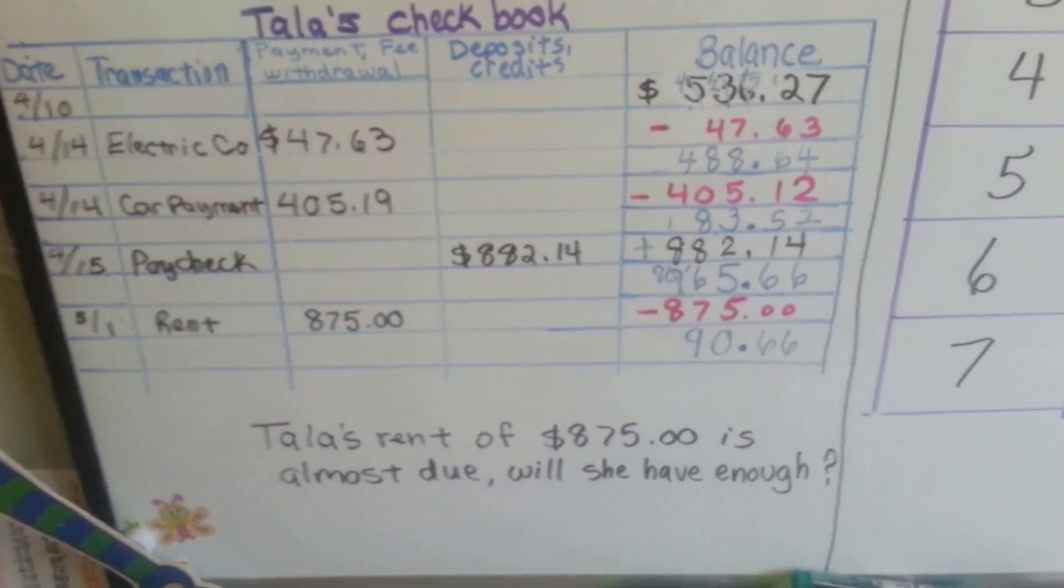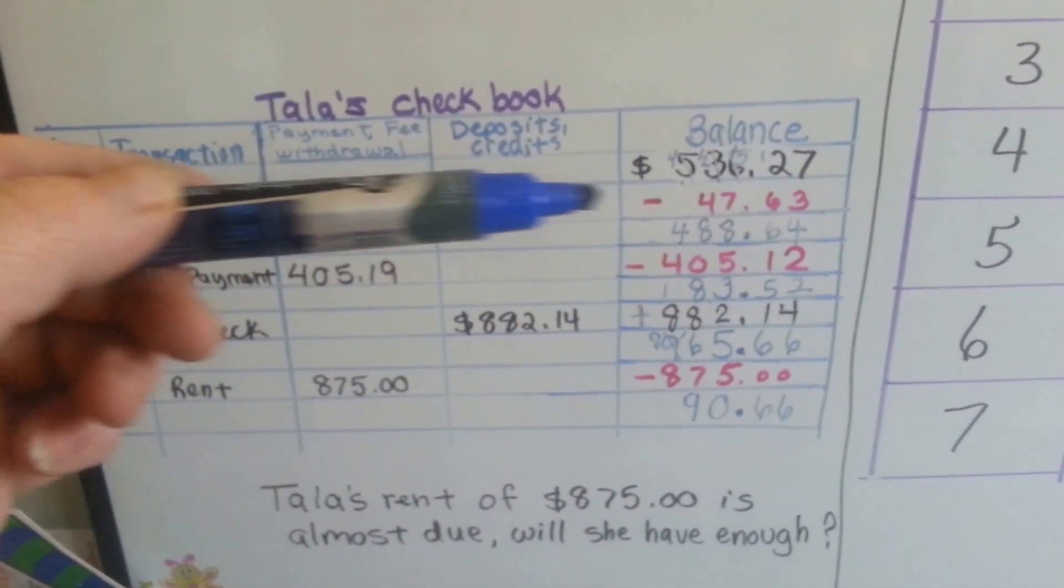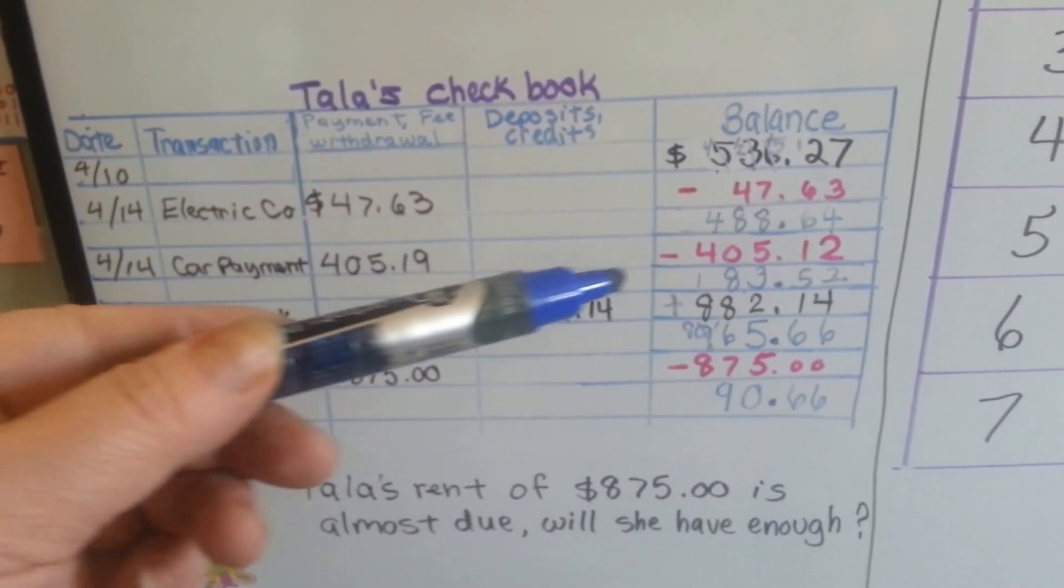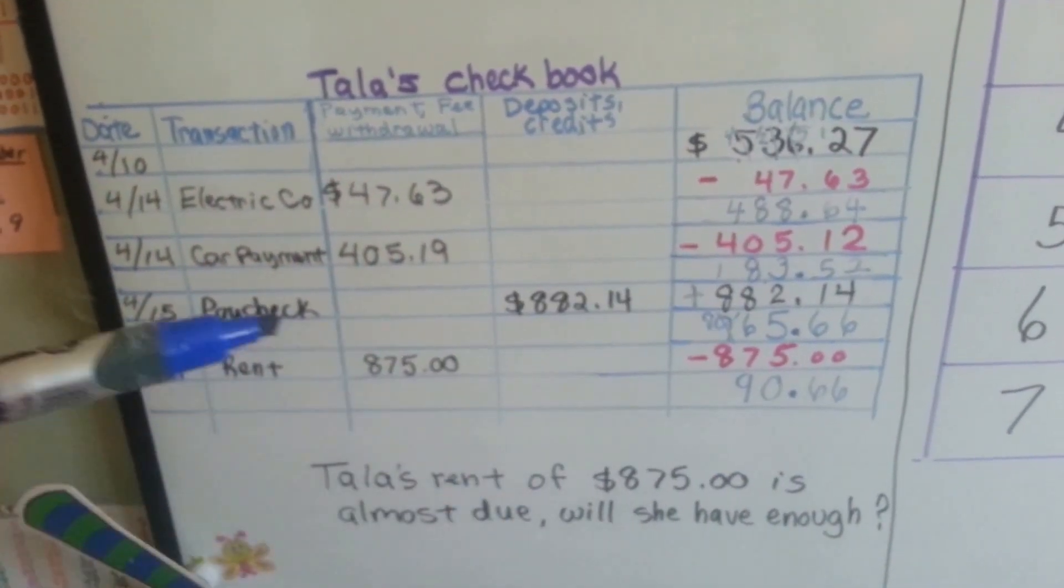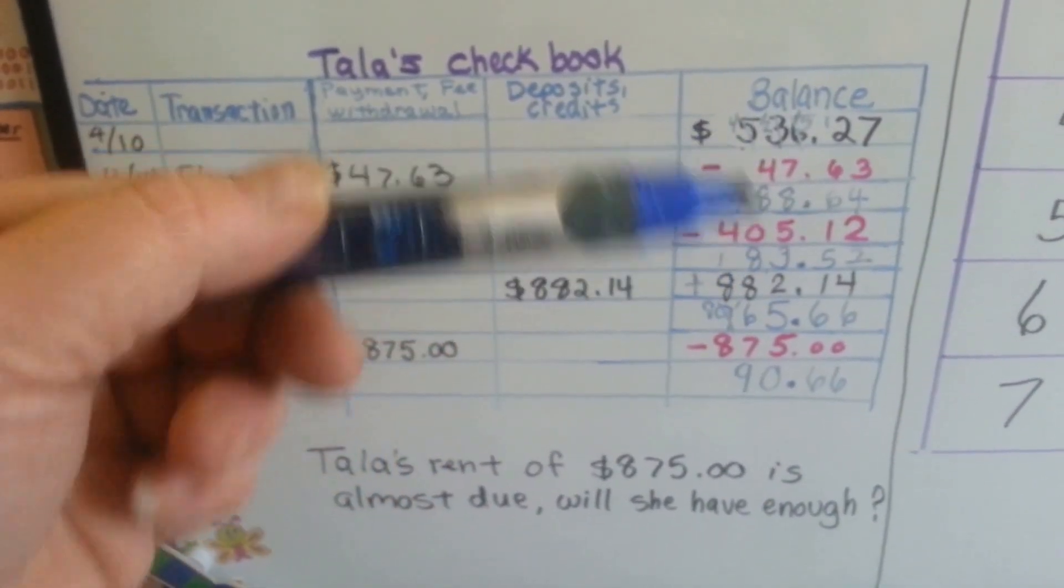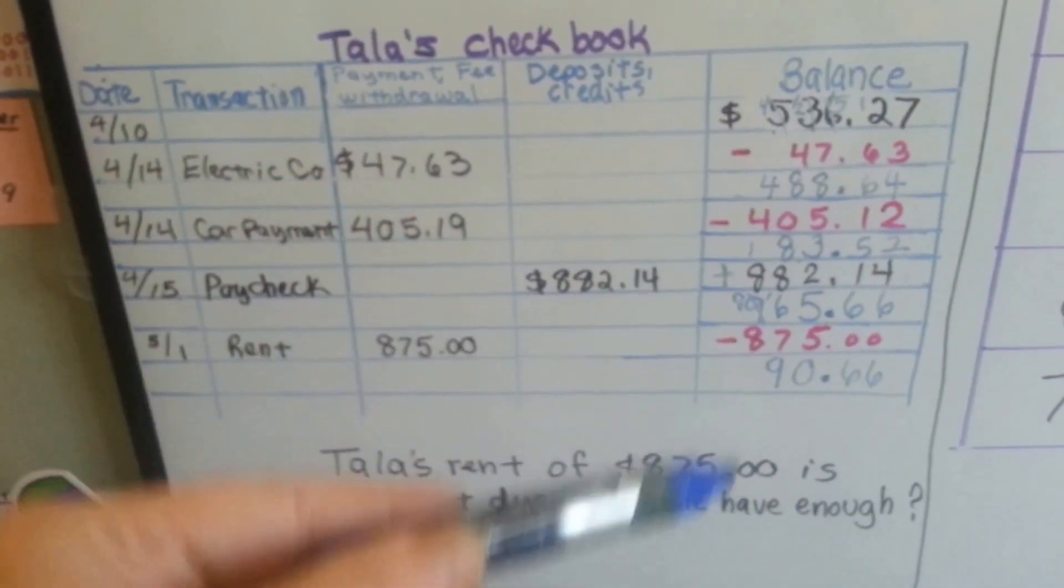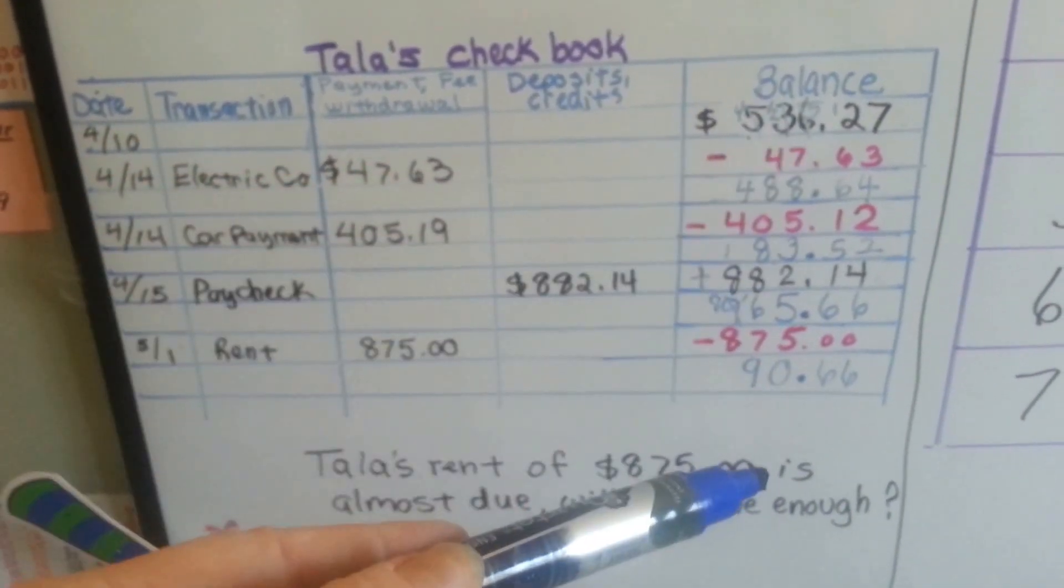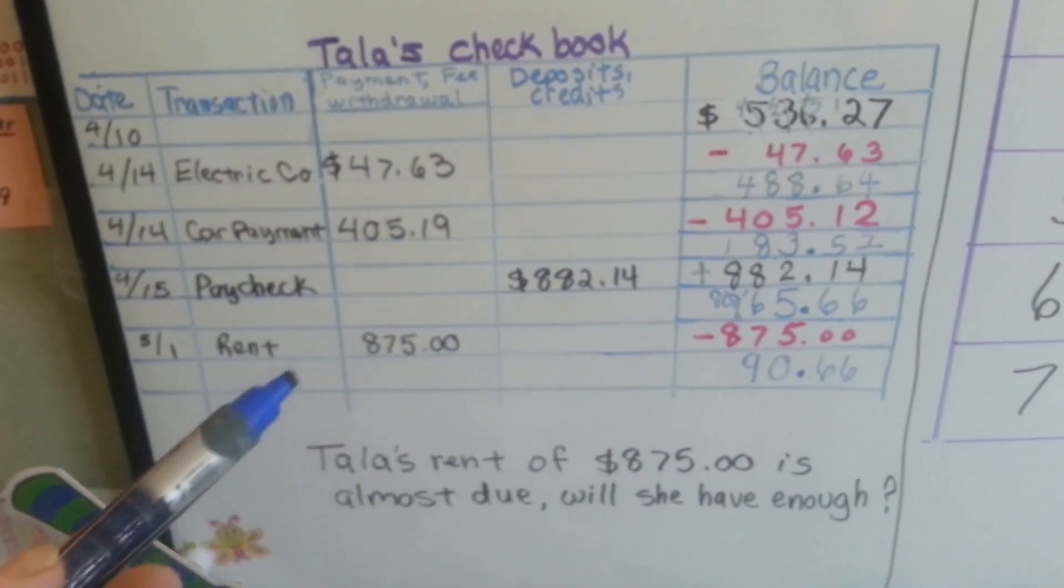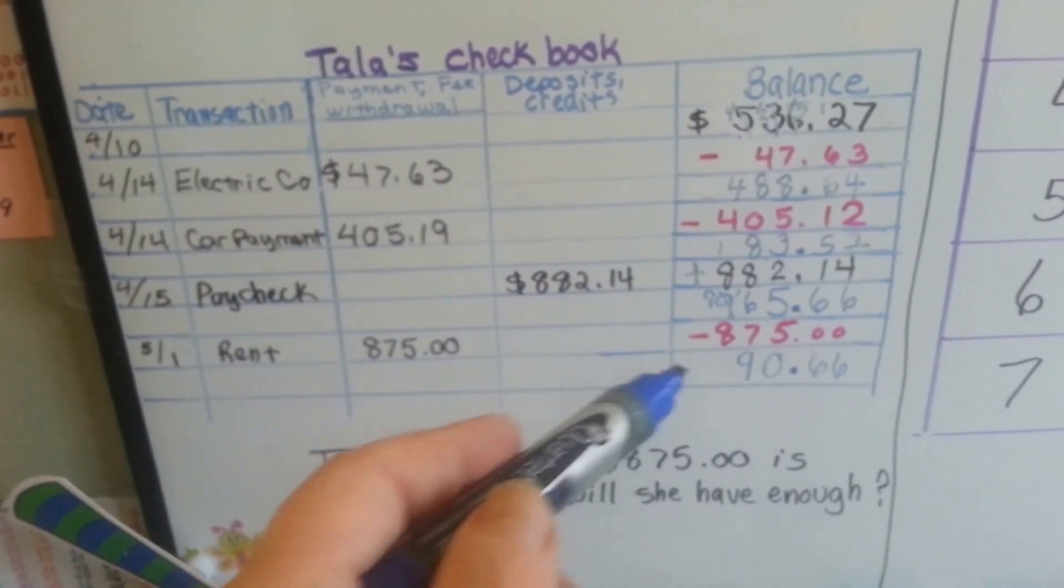She did have enough to pay her rent. So do you see how the checkbook worked? Every time she got a bill that she paid, she subtracted it and got a new balance. And then she'd pay another bill and subtract it and get a new balance. Then when she got her paycheck, she would deposit it and she would add it and her balance would go back up. And then she would pay a bill and subtract it and her balance would go back down. By keeping track of her balance in her checking account, she knows she can't go buy a $100 dress because she doesn't have the money. She has to think about food or gas for her car, so she's got to hang on to it.